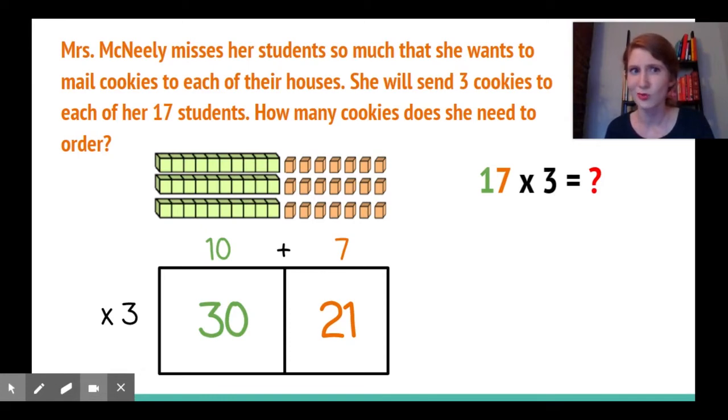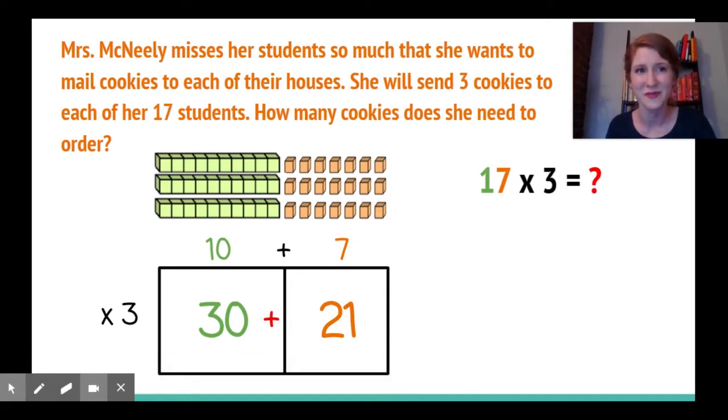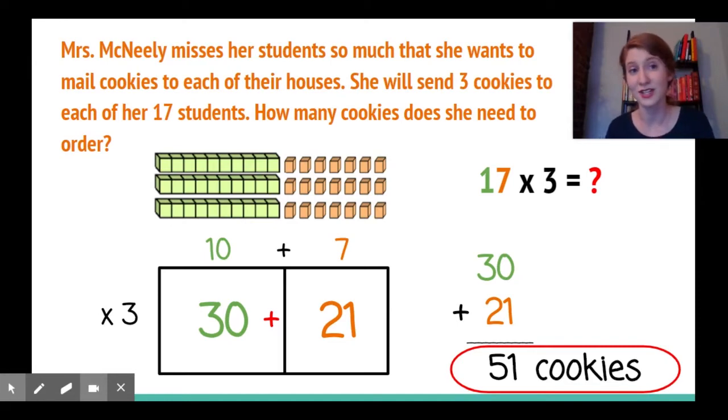So do I need to order 3021 cookies for my students? No way, that's way too many. At the beginning I broke 17 into 10 and 7 to get two different answers. At the end I'll need to add those two answers together. 30 plus 21 gives me 51 cookies for my final product.